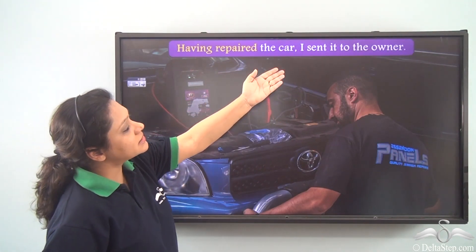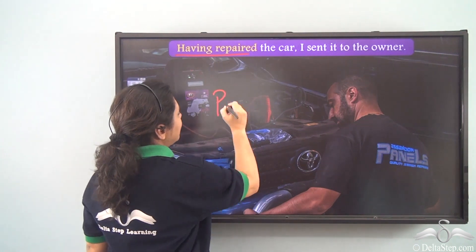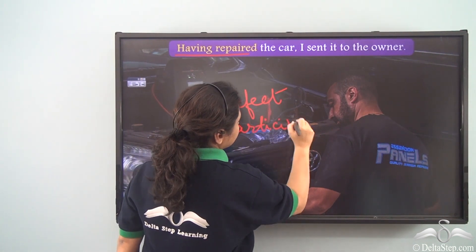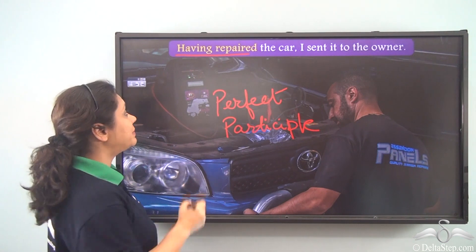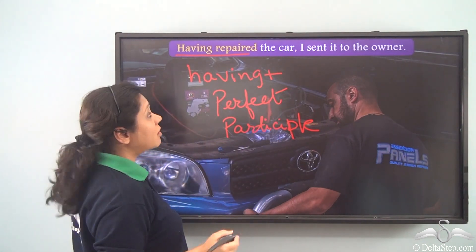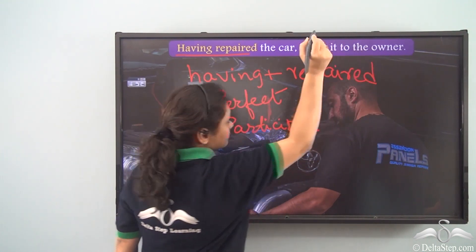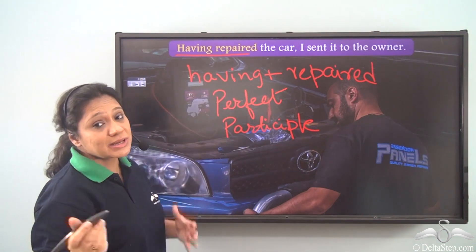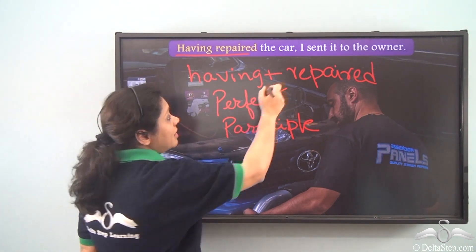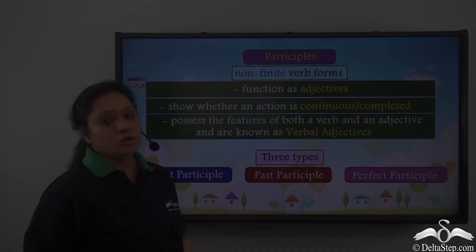For example: 'Having repaired the car, I sent it to the owner.' In this sentence, 'having repaired' is the perfect participle. We have formed it by adding 'having' along with the past participle form of the verb 'repair.' 'Having repaired' shows an action which happened before another action — before I sent the car to the owner, I repaired it.